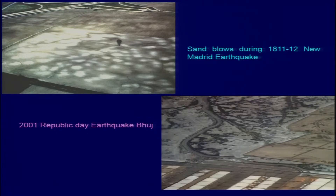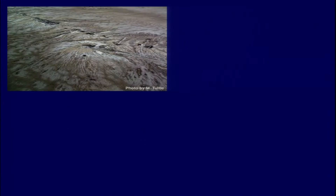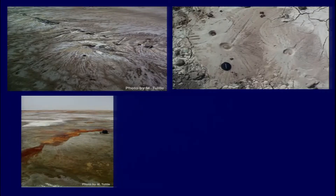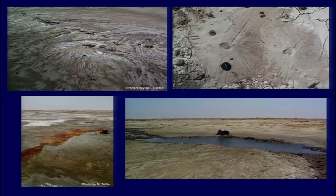These two earthquakes have been compared because to this day we consider the Kutch region to be a stable continental region sitting away from the most seismically active zones like the Himalayas. These were the sand blows — they typically resemble a volcanic cone — and along with that we also see the formation of longitudinal fissures. These fissures were instrumental in pouring out the liquefiable sand and water which was present close to the surface. You can see the wide fractures or fissures which were formed — they were full of water.